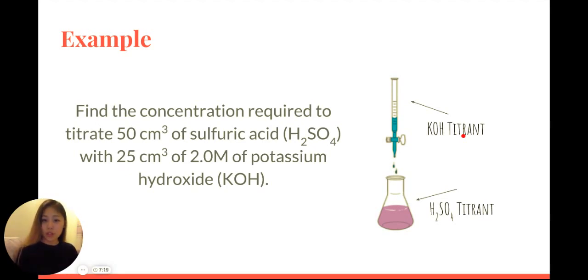When we do titrations, you always have one of the titrants in the burette. The burette is the one that drips down. In this case, we have potassium hydroxide in the burette. And we have a conical flask containing sulfuric acid, which in this case is colored purple.